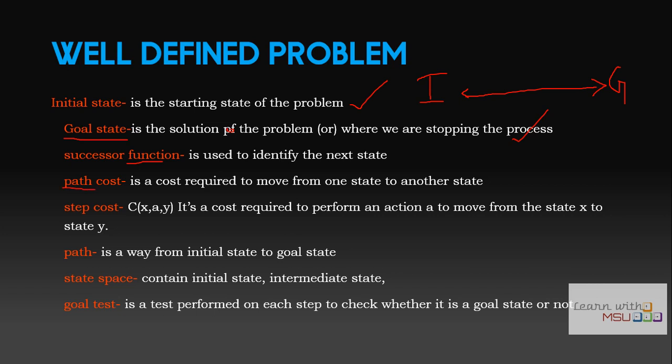The next important thing is path cost — it is the cost required to move from one state to another state. For everything you have to pay a cost; it may be time or space depending upon the problem. Step cost is the cost required to travel from state X to state Y when performing action A. If you are performing action A, the cost required to travel from X to Y is what we call the step cost.